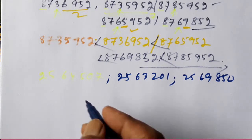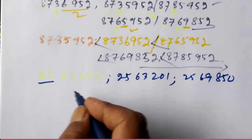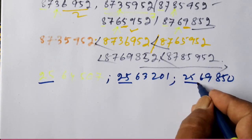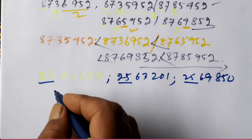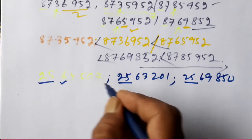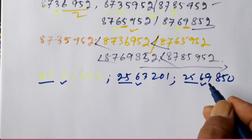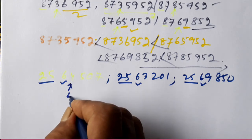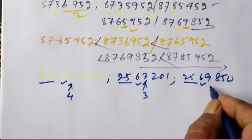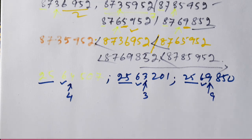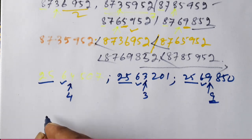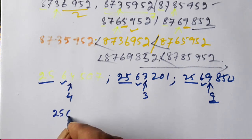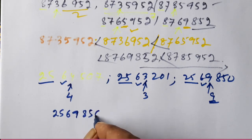Comparing the fourth digit: one number has 4, one has 3, and one has 9. We have to arrange in descending order, so we write the largest number first. The number with 9 in the fourth place is 2569850 — that is the largest. We write: 2569850.